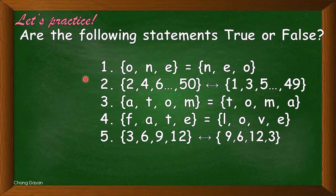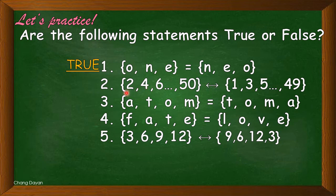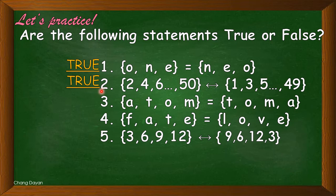Now let's practice. For number one, we have elements O, E and this symbol for equal sets: {O, E} is equal to {N, E, O}. The answer is true. For number two: even numbers from 2 to 50 is equivalent to odd numbers from 1 to 49. The answer is true — they are equivalent because they have the same number of elements but they do not have identical elements.